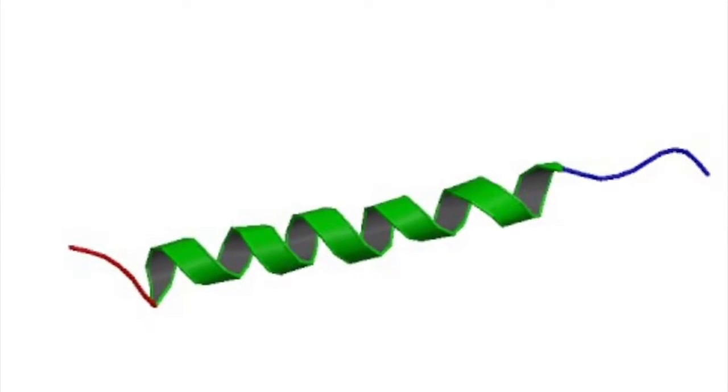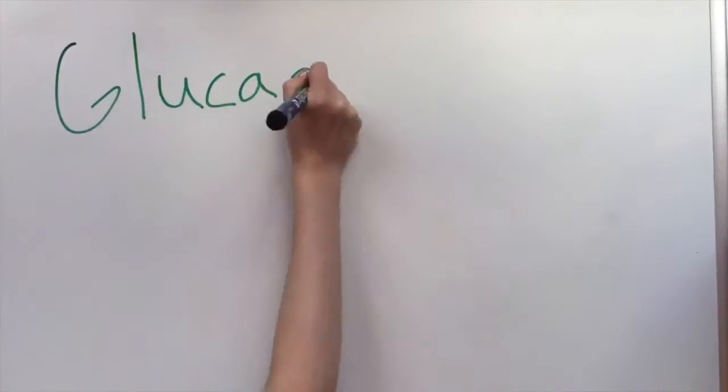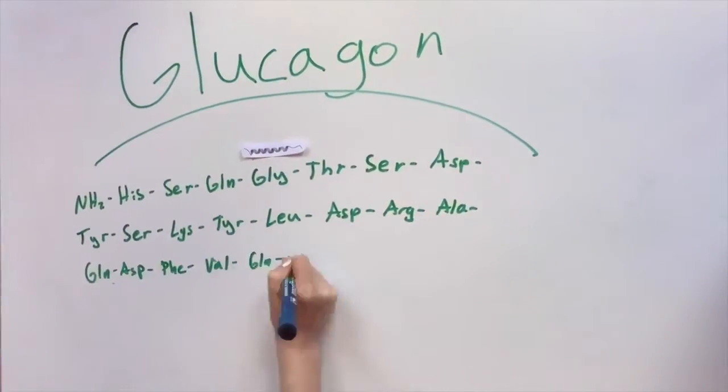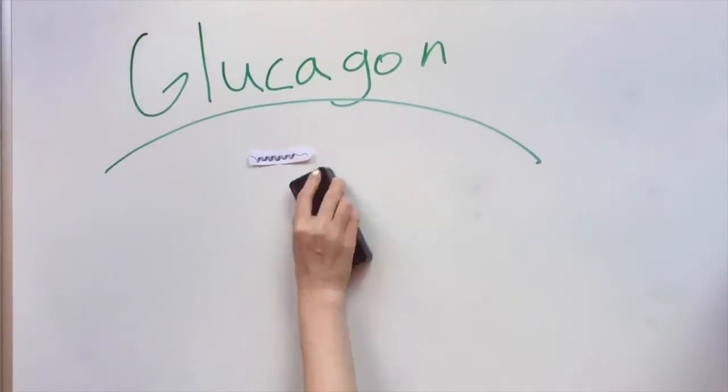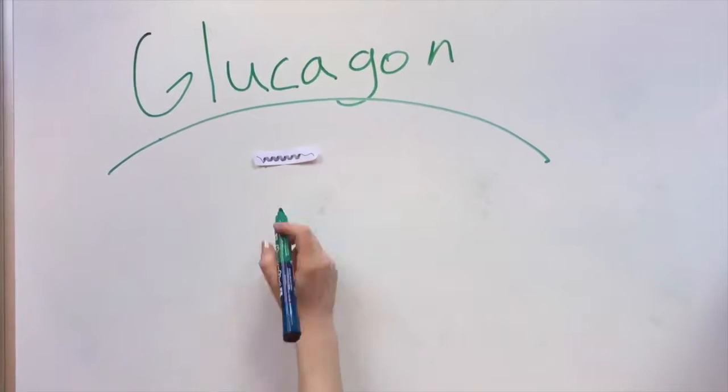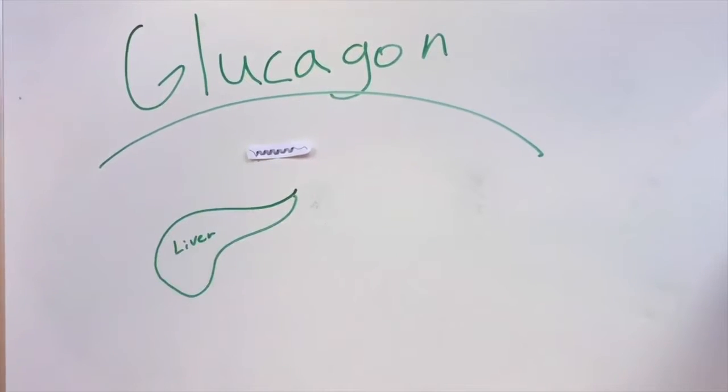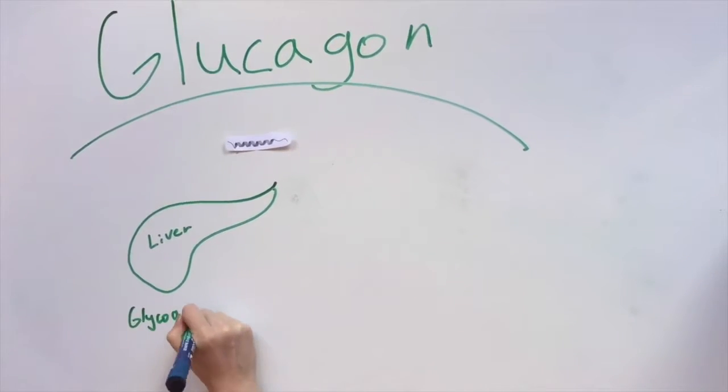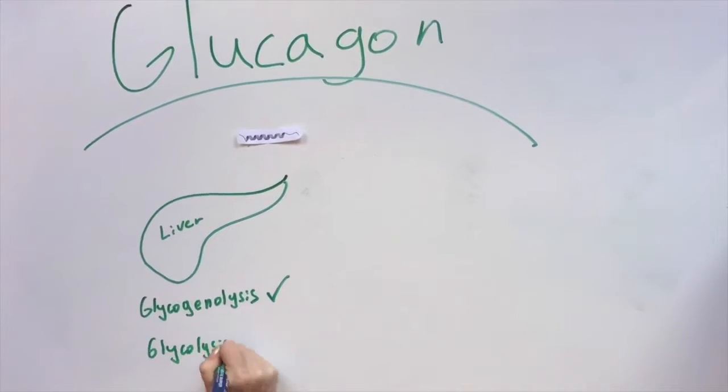The glucagon protein is a short alpha helix with 29 amino acids. It is synthesized by alpha cells. Glucagon raises the concentration of glucose in the bloodstream through a process called glycogenolysis in the liver. It also deactivates glycolysis in the liver. Glucagon binds to its receptors in the liver and kidneys.